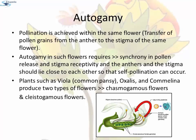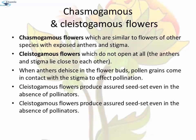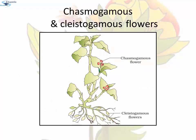Chasmogamous flowers are similar to the flowers of other species with exposed anthers and stigma. Cleistogamous flowers do not open at all; in such flowers the anthers and stigma lie very close to each other. When anthers dehisce in the flower buds, pollen grains come in contact with stigma to affect pollination. The cleistogamous flowers are invariably autogamous as there is no chance of cross pollen landing on the stigma. Cleistogamous flowers produce assured seed set even in the absence of pollinators. Here you can see that the chasmogamous flowers are open and the cleistogamous flowers are closed, so self-pollination will occur within the flower.